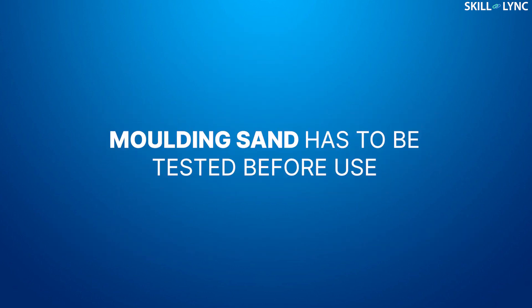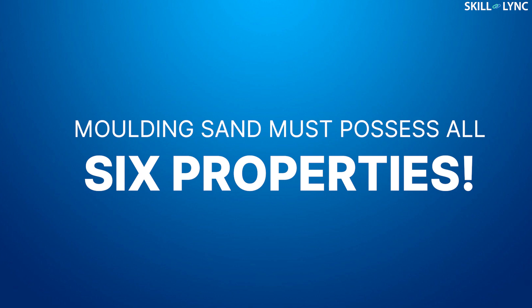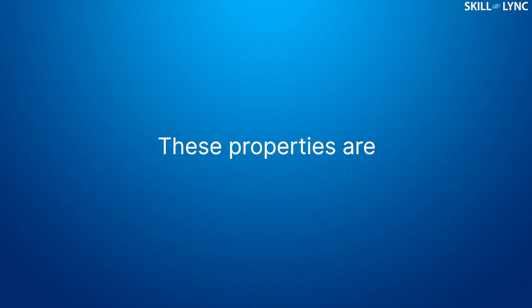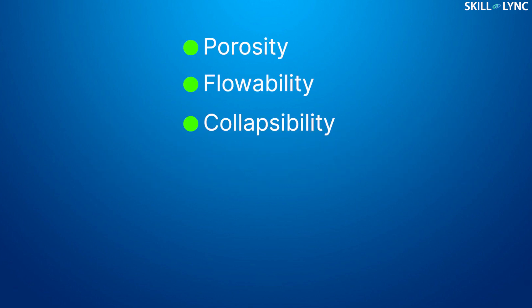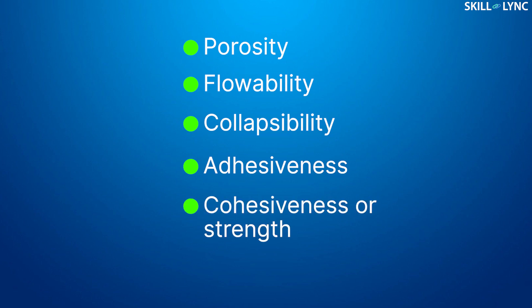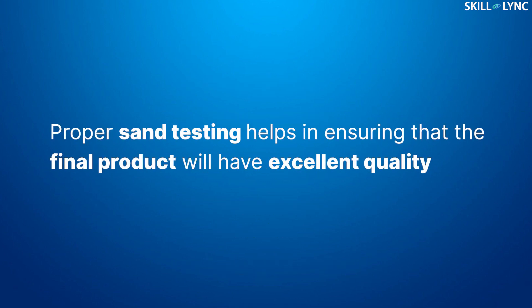The molding sand, before being put to use, is first tested. During the test, if the molding sand is determined to possess the six properties — porosity, flowability, collapsibility, adhesiveness, cohesiveness, and refractoriness — it will be used for the sand casting process. Proper testing ensures that the sand used for production possesses the required properties, so the product obtained has excellent quality and minimal defects.